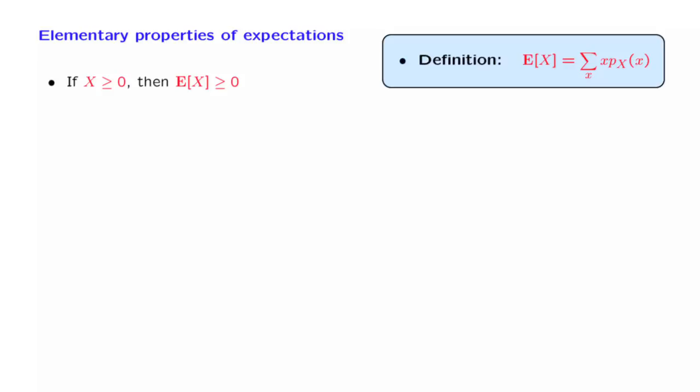The first property is the following. If you have a random variable which is non-negative, then its expected value is also non-negative. What does it mean that a random variable is non-negative? What it means is that for all possible outcomes of the experiment, no matter what the outcome is, the associated numerical value of the random variable is a non-negative number.